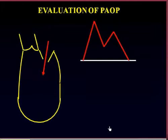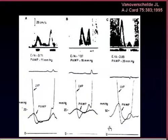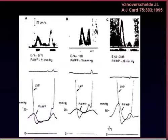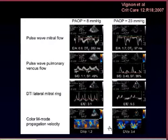We can try to estimate pulmonary artery occluded pressure using mitral inflow. If we look at left ventricular pressure and left atrial pressure traces, we can understand the determinants of the E wave and A wave of mitral flow. When left atrial pressure increases, there is a change in the morphology of the mitral flow, and it is possible to quantify this.